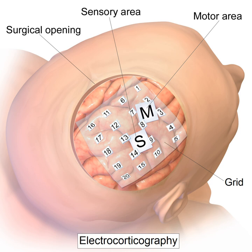Electrocorticography, or intracranial electroencephalography, is a type of electrophysiological monitoring that uses electrodes placed directly on the exposed surface of the brain to record electrical activity from the cerebral cortex. In contrast, conventional electroencephalography electrodes monitor this activity from outside the skull. ECoG may be performed either in the operating room during surgery or outside of surgery. Because a craniotomy is required to implant the electrode grid, ECoG is an invasive procedure.